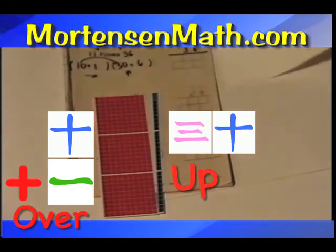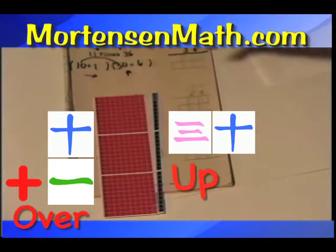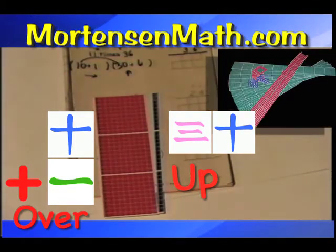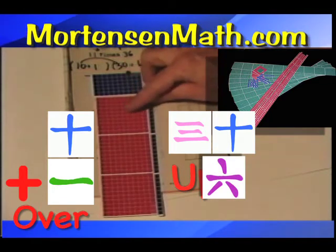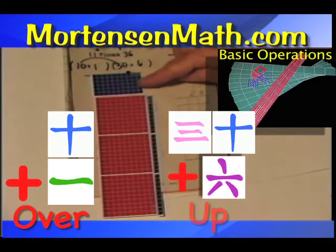Notice. One, two, three, four, five, six. I can see that piece. Six by ten. Over ten, over ten, up six.